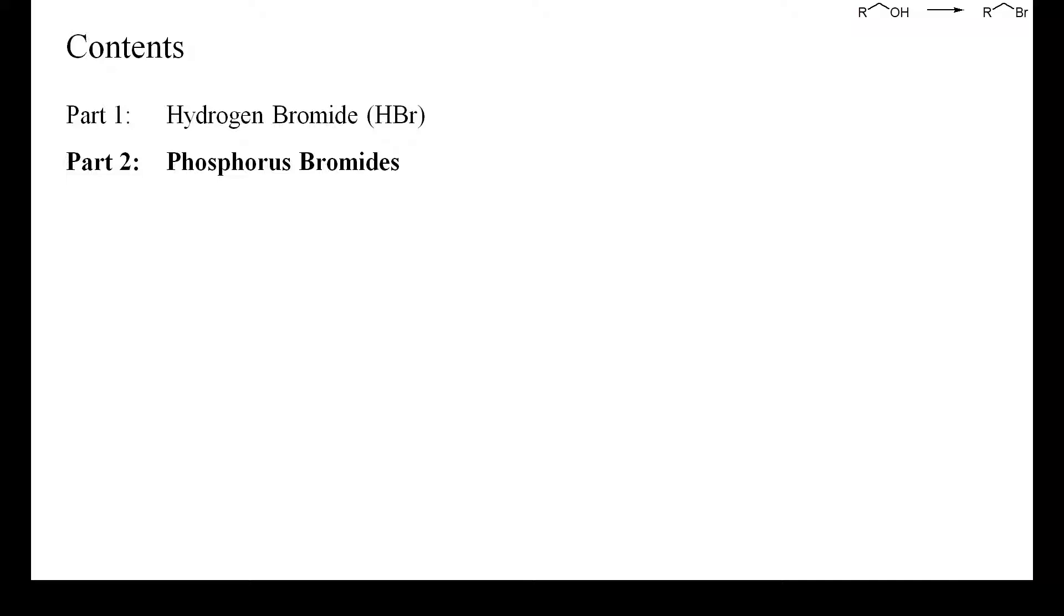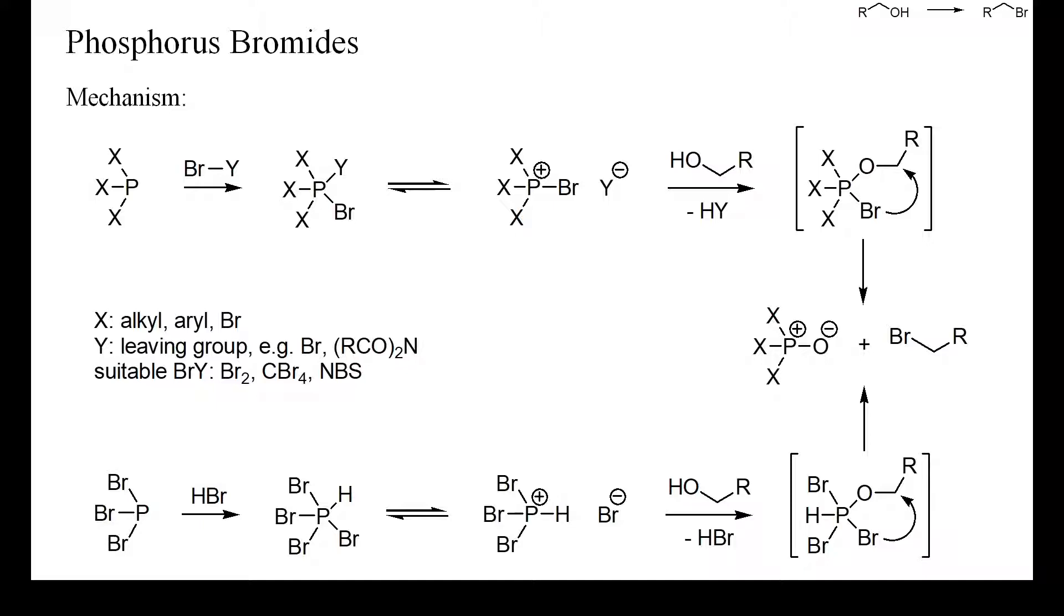These can also be used under neutral or basic reaction conditions and are often the best choice if one's starting alcohol is sensitive toward acids. The most common phosphorus-based reagents used for deoxybrominations are trialkyl or triaryl phosphines and phosphorus tribromide in combination with an electrophilic brominating reagent such as bromine, carbon tetrabromide, or N-bromosuccinimide.